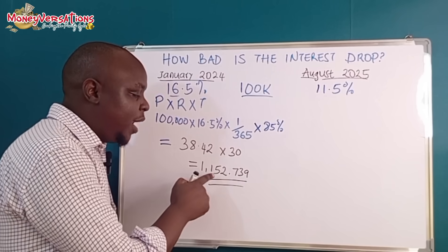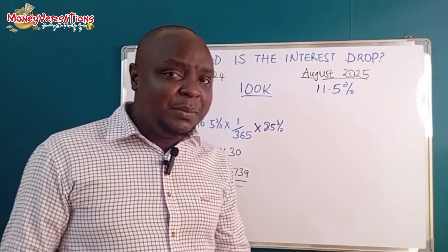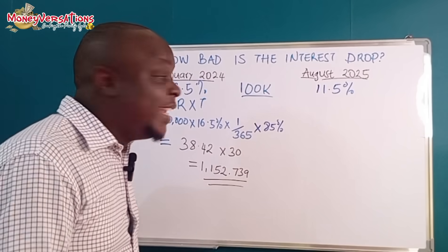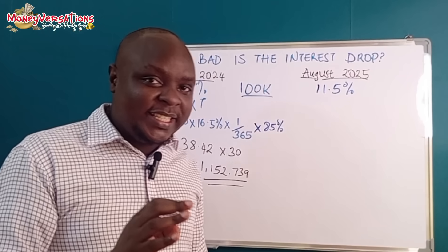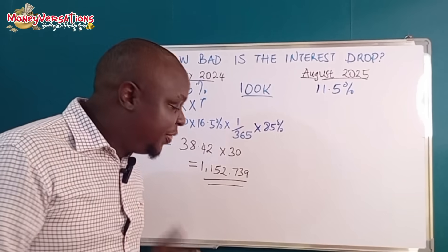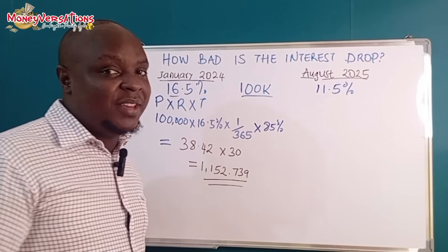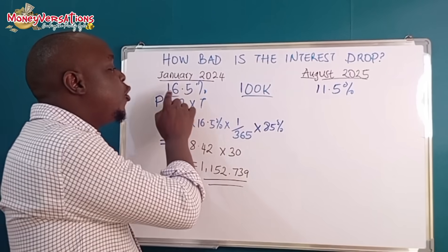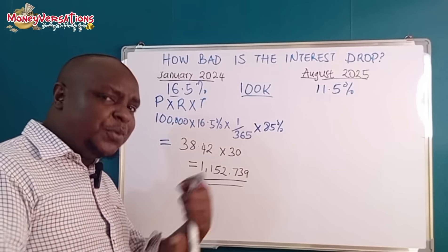So ladies and gentlemen, if I had 100,000 shillings invested or deposited in a money market fund account giving me 16.5 percent, that was the daily interest rate at that point, then at the end of the month I was supposed to get an average of 1,152.739 — roughly 1,153 shillings — going by the 16.5 percent rate.